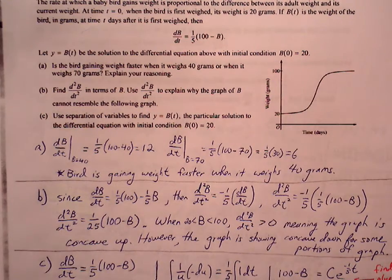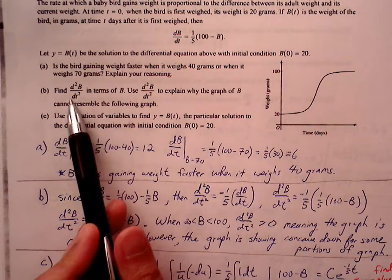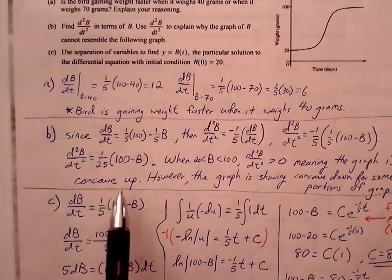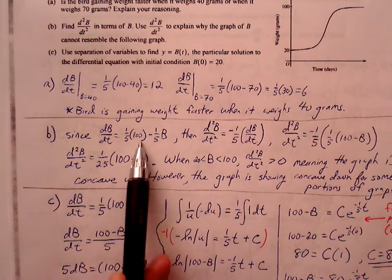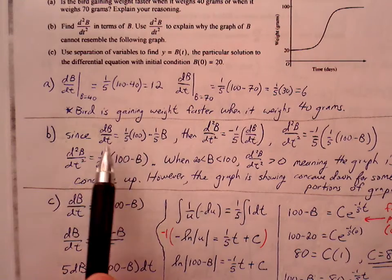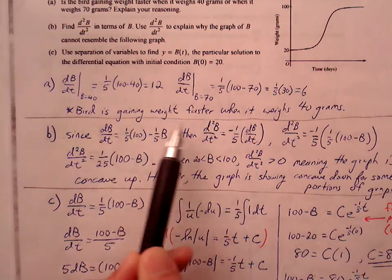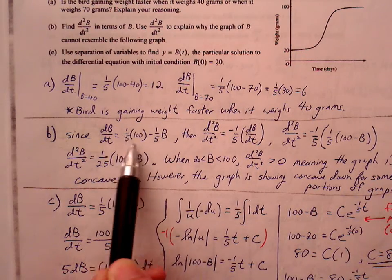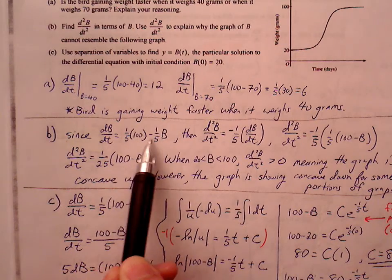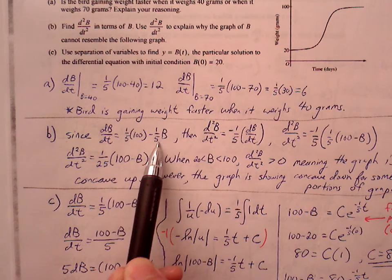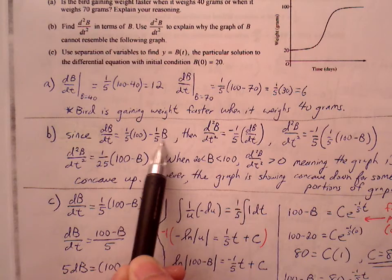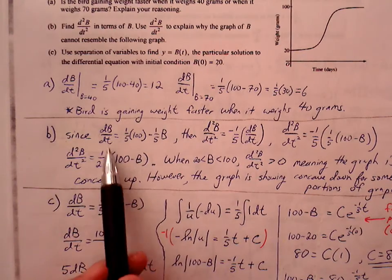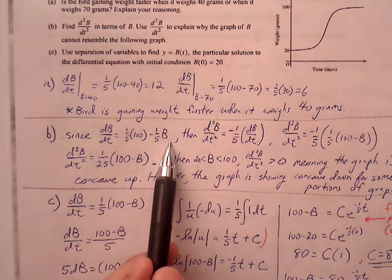For part (b), it says find d²B/dt². That's asking for the second derivative. Since our dB/dt is this equation, I distributed 1/5 to make it a little bit easier to find the derivative. So dB/dt in second derivative notation becomes 1/5 times 100, which is just a constant that will go to 0, but 1/5 B will become 1/5 dB/dt.